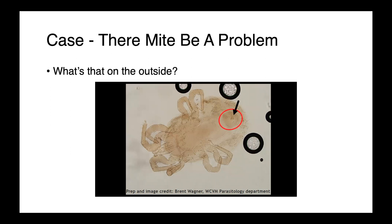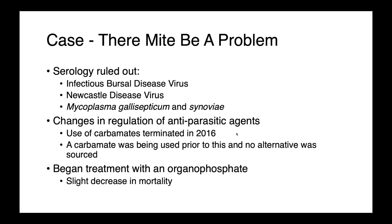The mites were identified within the Department of Veterinary Microbiology based on specific anatomical structures. Within a red circle is an anatomical structure very characteristic of these mites. But this didn't really explain the mortality — an infestation of ectoparasites isn't typically a great reason for birds to be dying. Serological testing ruled out a number of immunosuppressive and other infectious diseases, including infectious bursal disease virus, Newcastle disease virus, and Mycoplasma species.